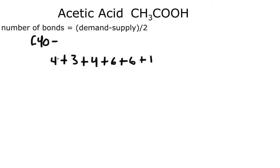Now if we add all this up, four plus three is seven, seven plus four is eleven, eleven plus six is seventeen, seventeen plus six is twenty-three, plus one is twenty-four. So forty minus twenty-four all over two - that would be sixteen divided by two, which is eight. So that's how many bonds our molecule should contain.